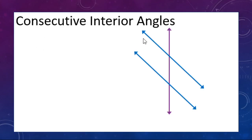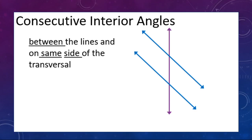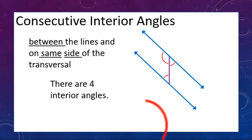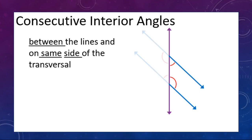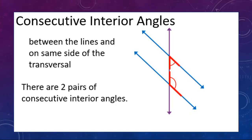Now, looking at consecutive interior angles. These are interior — between the lines — and 'consecutive' means next to each other, on the same side of the transversal. We ignore the exterior angles and focus on the four interior angles. The consecutive part means they're on the same side of the transversal, giving us two pairs.